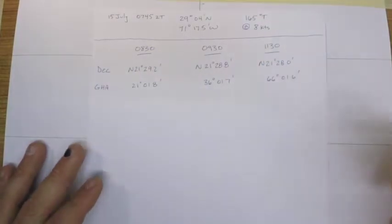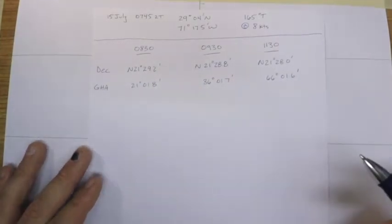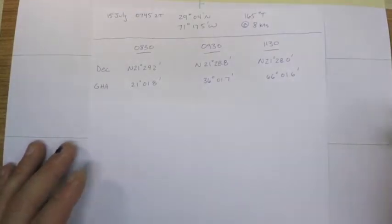The declination was given to us, and when we use HO 229 we are going to be using whole values of declination, so that's already there. Likewise GHA was given to us, and from there we need to get to our local hour angle or LHA in order to use HO 229.